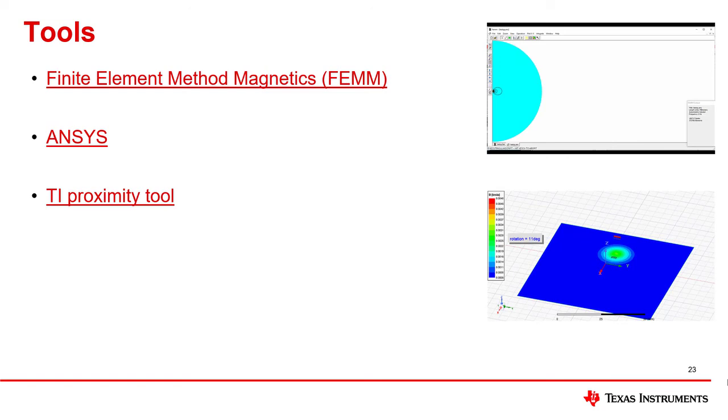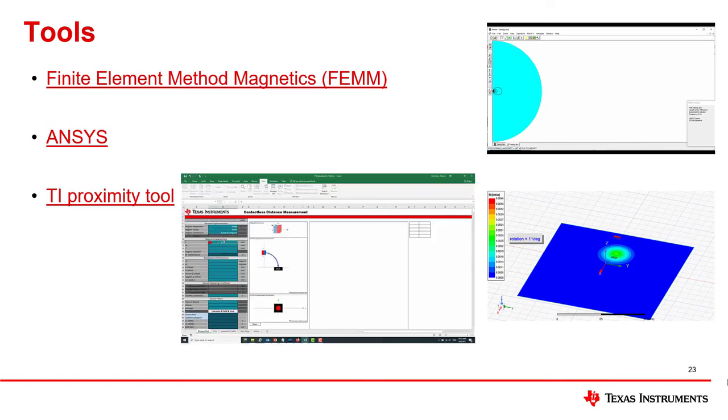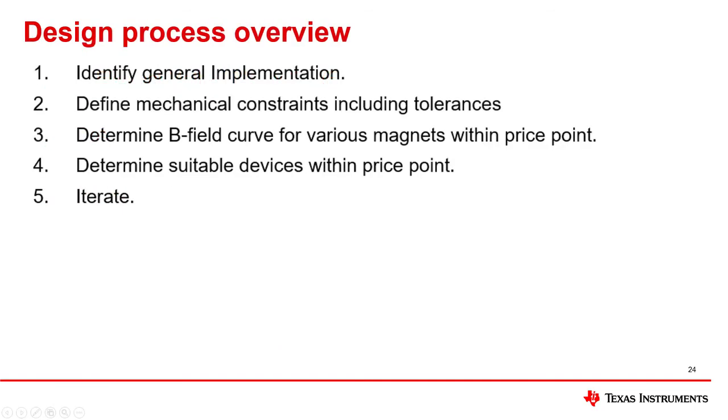Thankfully, TI has taken the liberty of simplifying the process even further with our own tool, which allows you to put in all relevant design constraints so that it can build the model and execute the calculations or simulations for you. Now equipped with the tools to help you quickly determine the expected flux you will measure according to magnet position relative to the sensor, you can now move on to the final basic step, Iterate.